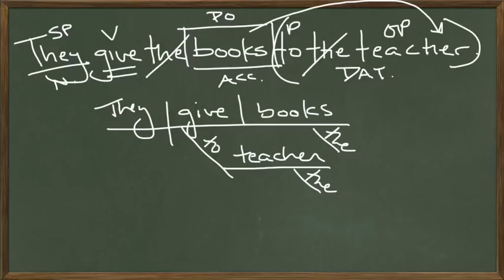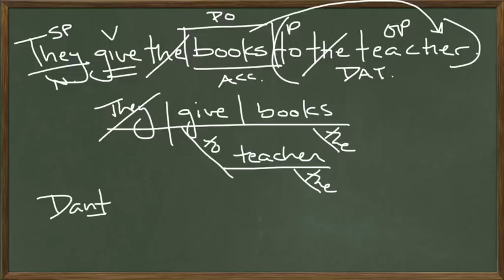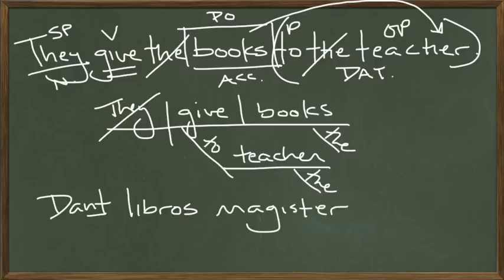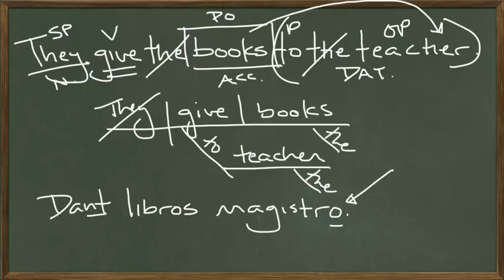Now all we have to do is translate into Latin. Unless we're showing emphasis, we don't need the preposition. So: dant — that's 'they give.' Dant libros — they give the books. Now we need 'to the teacher.' Teacher is magister — but that's nominative case, so we've got to change it to the dative. They're giving him the books: dant libros magistro. Dant libros magistro — dative case. See that ending? Dant libros magistro.